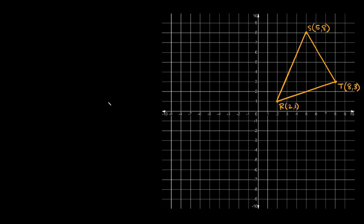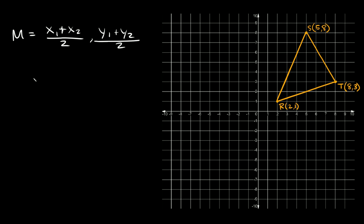So that's basically what we're going to do with this triangle right here. Let's find the centroid of this triangle. The first thing we want to do is find the middle of one of our sides — in this case, the bottom segment from R to T. We're going to do that using the midpoint formula. The midpoint is equal to (x₁ + x₂)/2 for the x-coordinate and (y₁ + y₂)/2 for the y-coordinate.